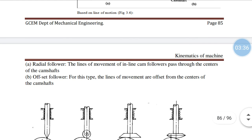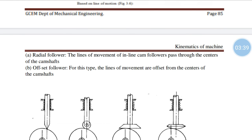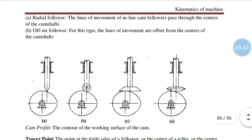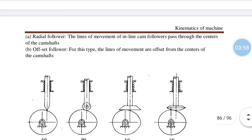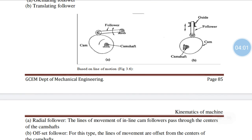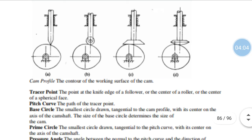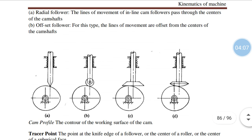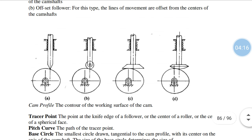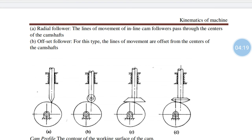Another one is the offset follower. For this type, the line of movement is offset from the center of the camshaft. The follower is not at the center — the camshaft axis and the follower axis are not the same. These are called offset followers. Radial followers have the follower axis and cam axis aligned, whereas in offset followers the follower axis and the cam axis are not on the same axis — it is offset.